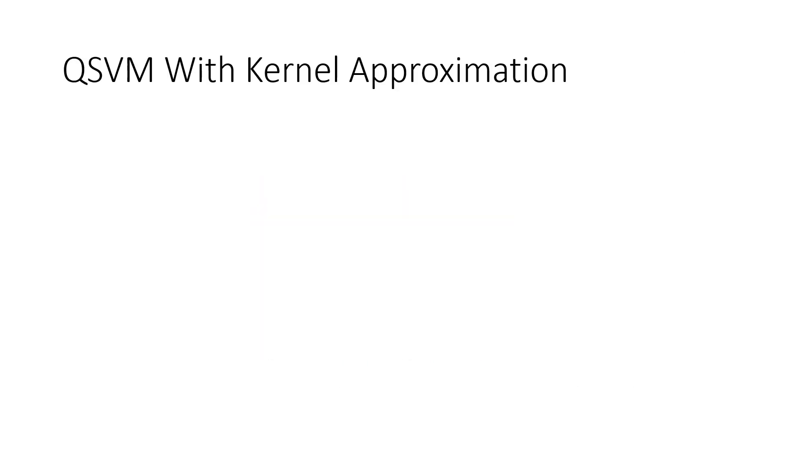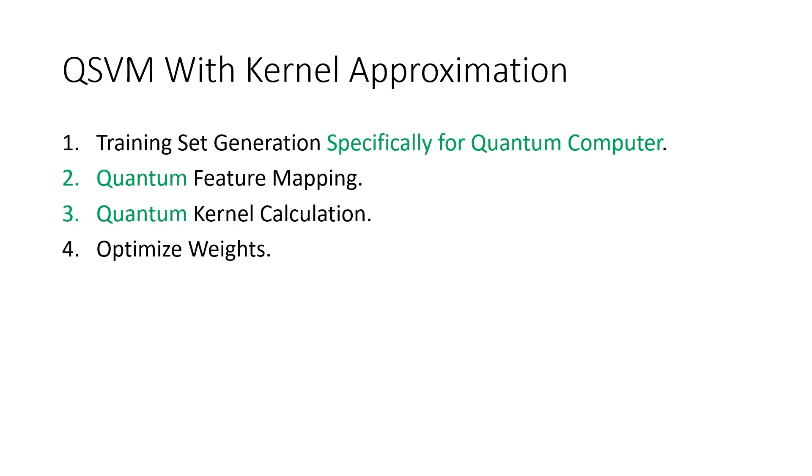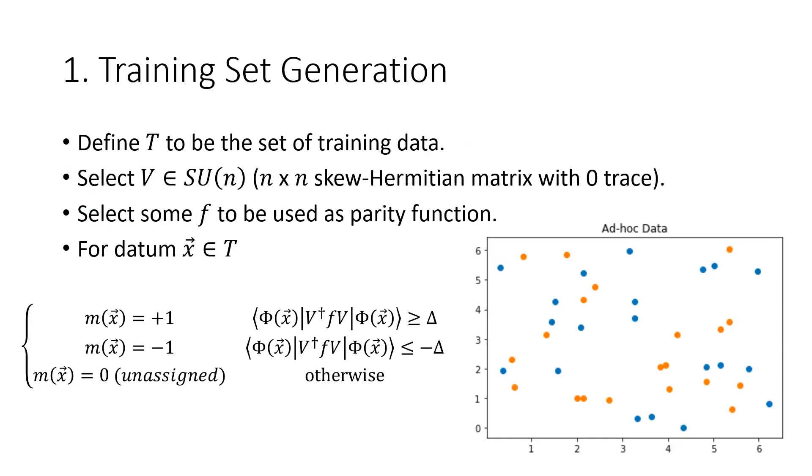The steps for the first QSVM method in this paper are similar to the steps involved in the SVM. However, the authors use a specially designed training set, map the features onto qubits, and use a quantum computer to evaluate the kernel. First, the authors generate a training set designed to be easy for the QSVM to handle. The exact process for generating this data is shown here.